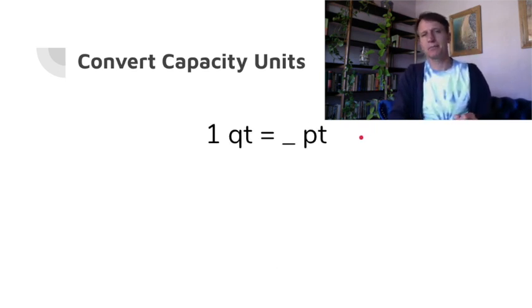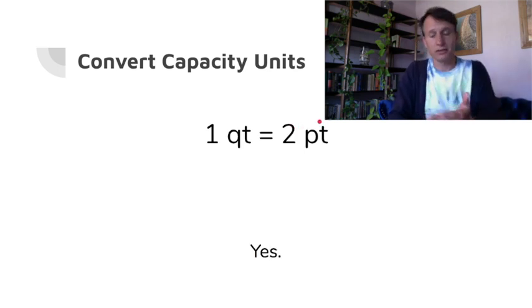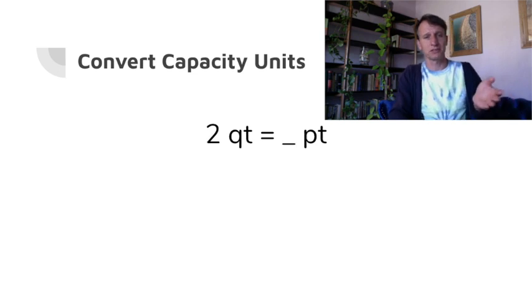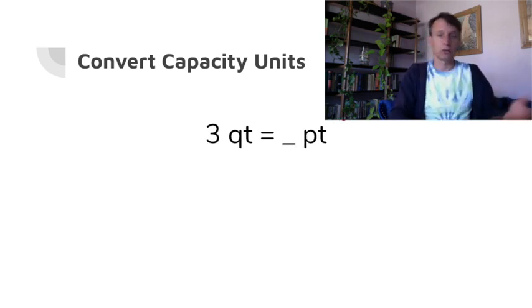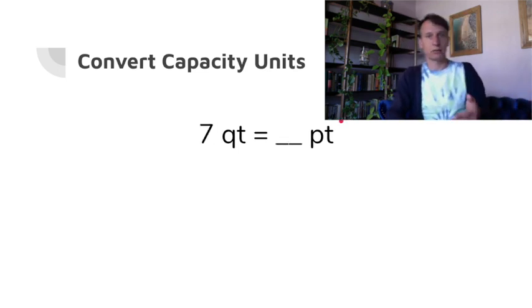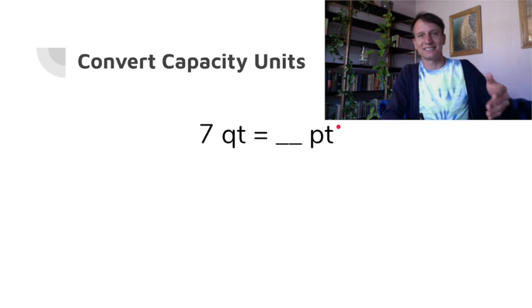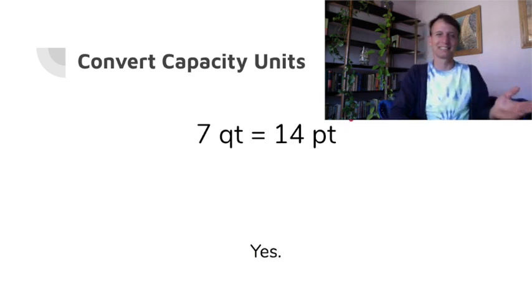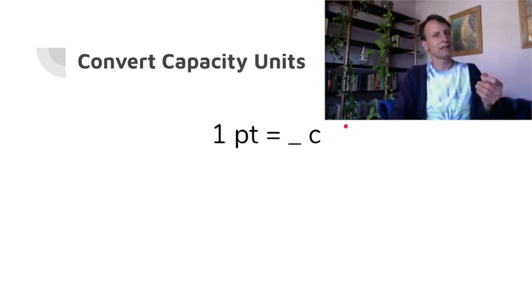Now how many pints in a quart? Yeah, it's two. Remember that. So one quart is two pints, and then all the conversions after that, once you have that piece of information, everything else is pretty straightforward. So two quarts would be four pints, and three quarts would be six pints, and seven quarts would be—I'm just kidding—14 pints.